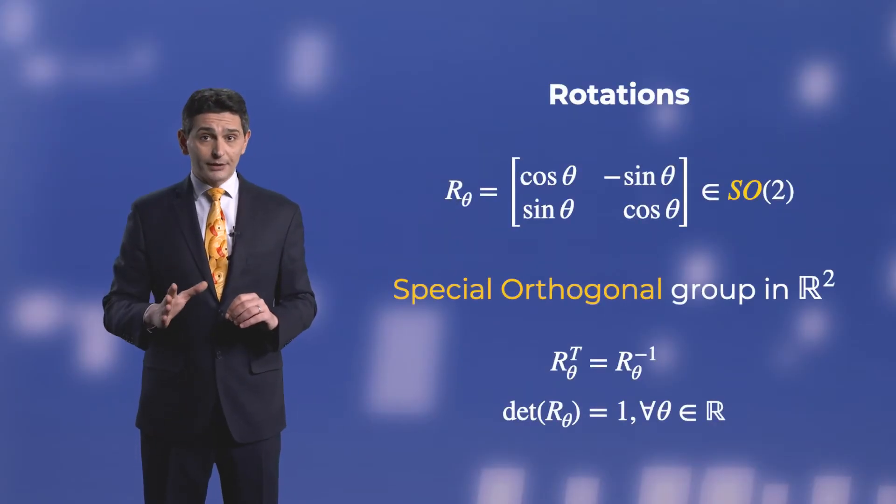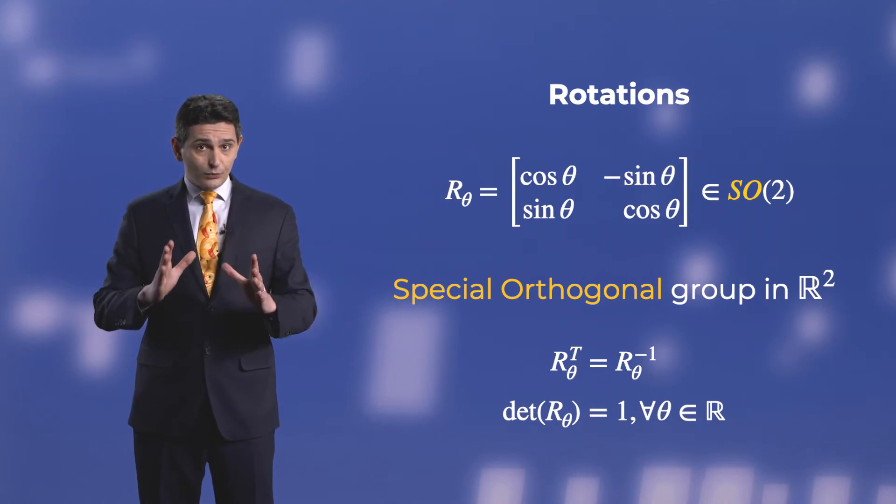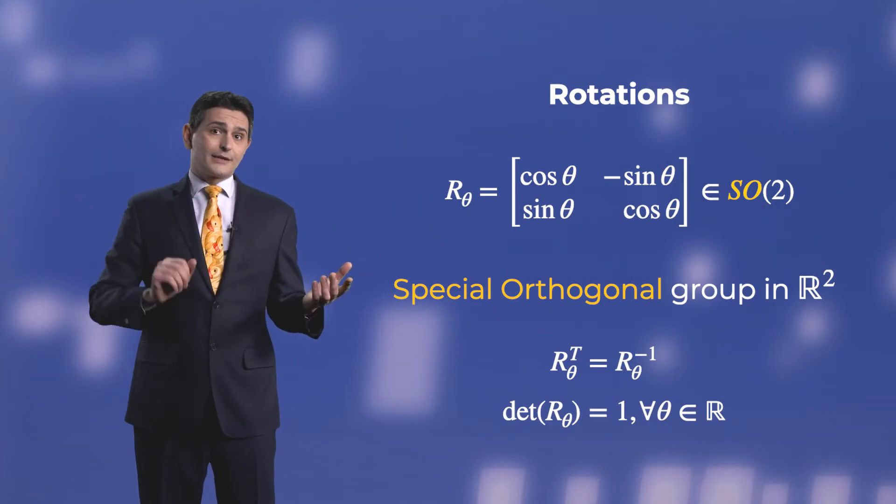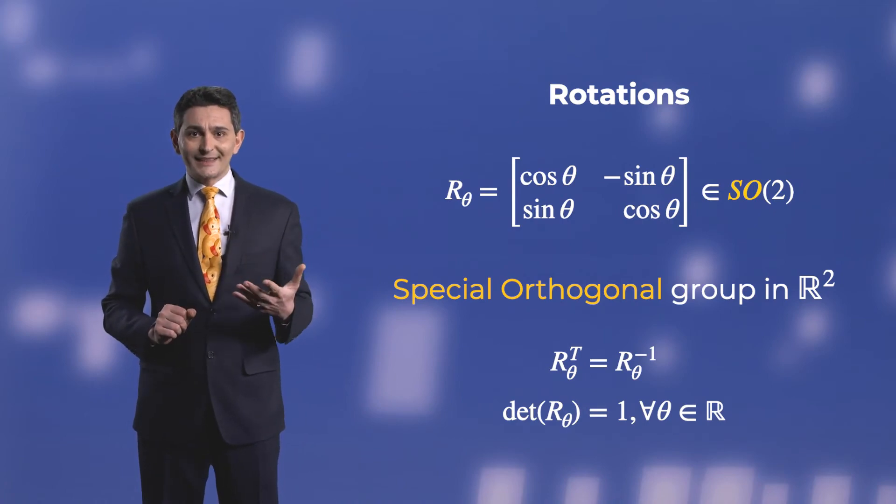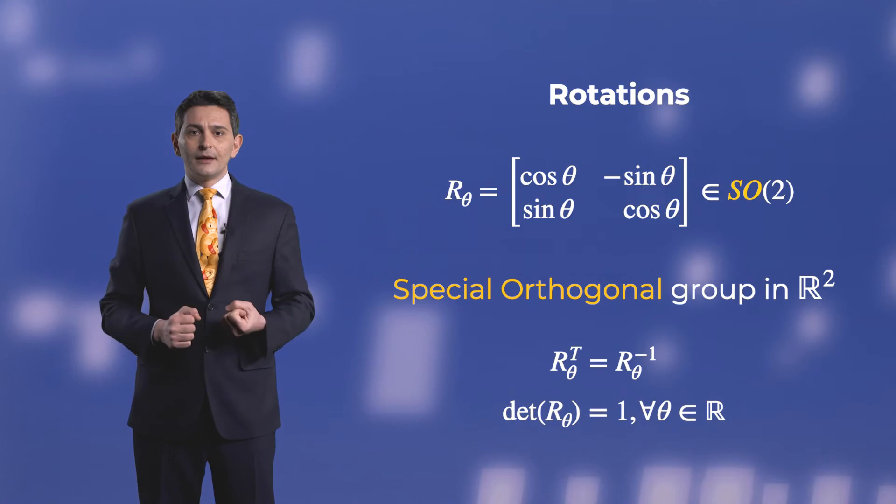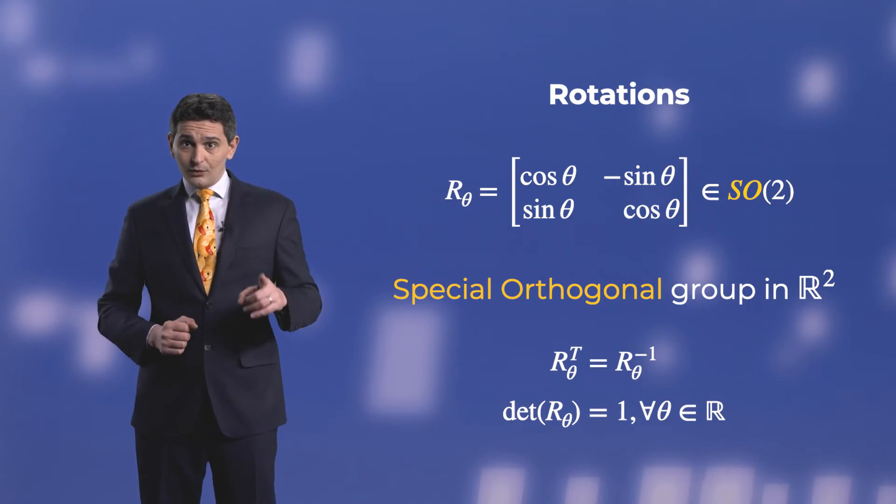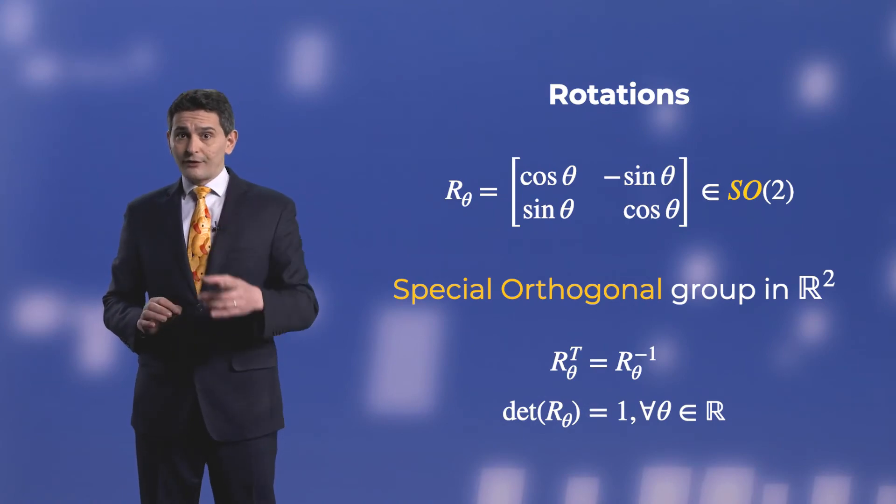It has a special property, it is orthogonal. This means that for any angle, its determinant is 1, and its inverse is equal to its transpose. Even the technical name says it, it belongs to the special orthogonal group in 2D. If you're not convinced, or could use a refresher, pause this video now and verify these properties yourself.